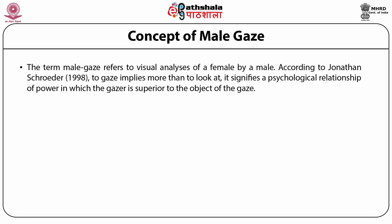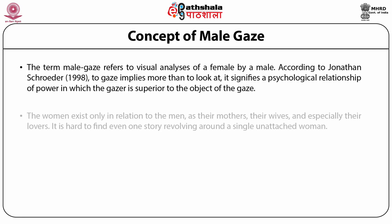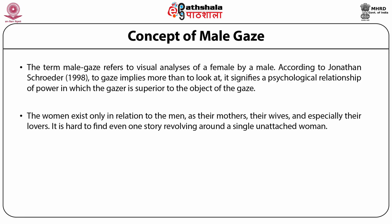According to Jonathan Schroeder, the gaze implies more than to look at. It signifies a psychological relationship of power in which the gazer is superior to the object of the gaze. In terms of cinema, the stories played out on the screen are the men's — their conflicts, their dreams, their aspirations, their tragedies, their revenge, their desires and their heroism. The women exist only in relation to the men as their mothers, their wives and especially their lovers. It is hard to find even one story revolving around a single unattached woman.